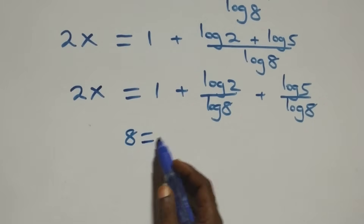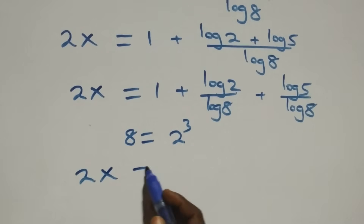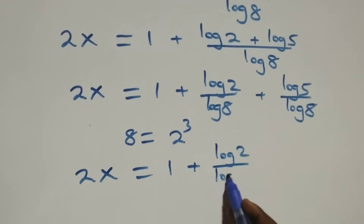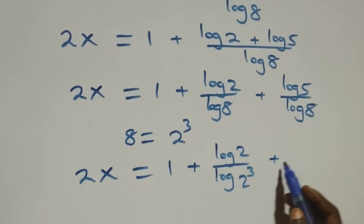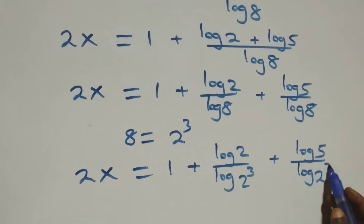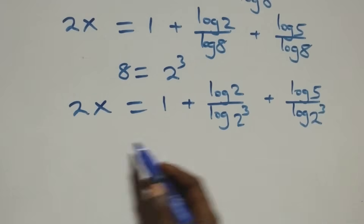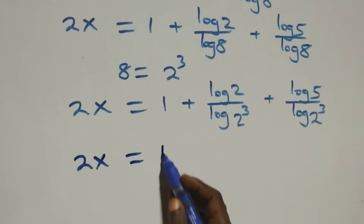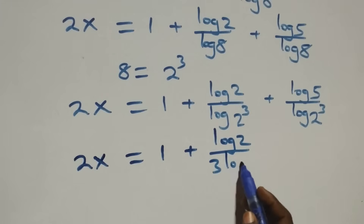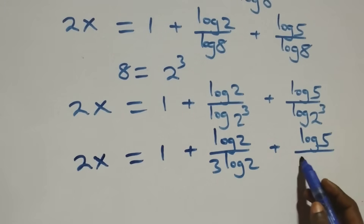We can write 8 as 2 times 2 times 2, which is 2 cubed. This becomes 2x equals 1 plus log 2 over log 2 cubed plus log 5 over log 2 cubed. We apply the power law of logarithm: the 3 comes out front in both terms. We have 2x equals 1 plus log 2 over 3 log 2 plus log 5 over 3 log 2.